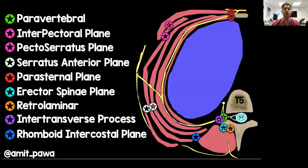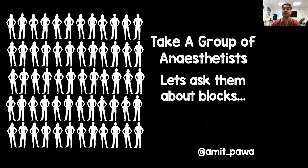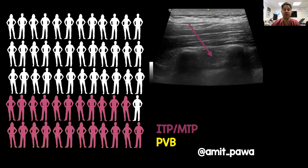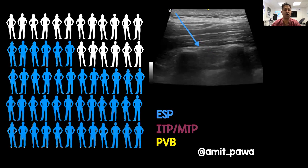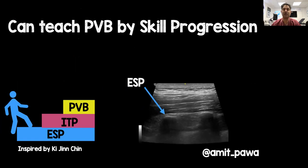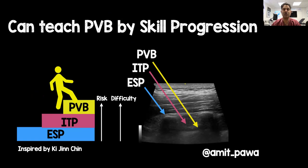We now have a whole host of new and novel blocks. The question is: can we use blocks in the paraspinal region to help when it comes to learning and performing paravertebral blocks? If you asked a group of general anaesthetists how many are happy to perform a paravertebral block, you'd get a small number. If you asked how many would perform an MTP — now the inter-transverse process block — you'd get a few more. But if you asked how many would perform an erector spinae plane block, that number would rise. I use this in clinical practice to teach the paravertebral block by skill progression: start with the erector spinae plane block, then take the needle further as confidence grows, until you're performing the paravertebral block — arguably the more difficult technique.